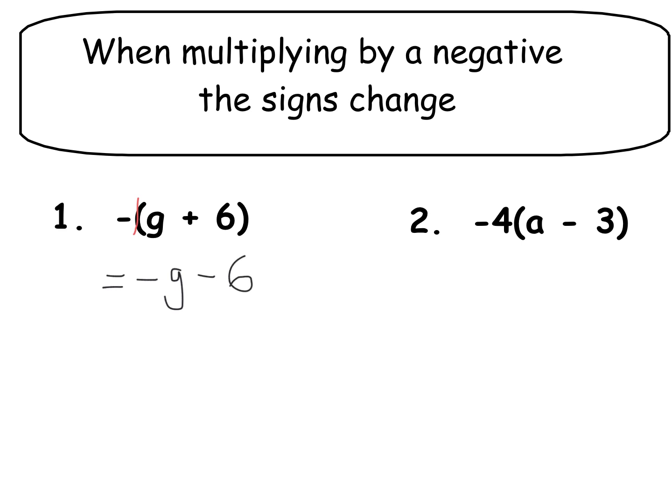Let's look at example two. So this time we're multiplying by negative four. So when we do negative four times a, that becomes negative four a. And when I do negative four times negative three, this turns into a positive. And four times three is 12. So you can see in both these ones, whichever sign was in the middle of the bracket has changed to its opposite sign.